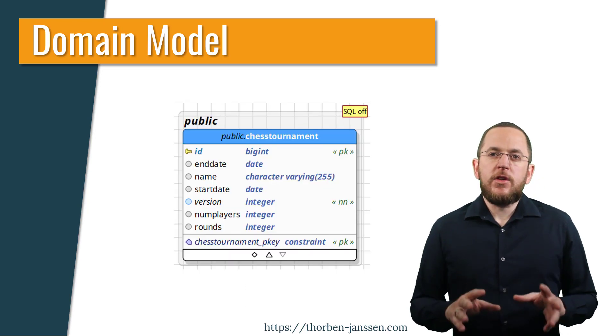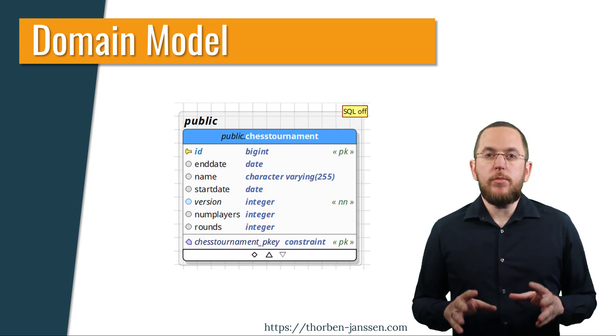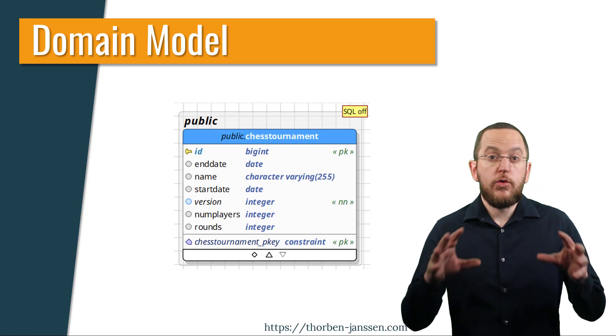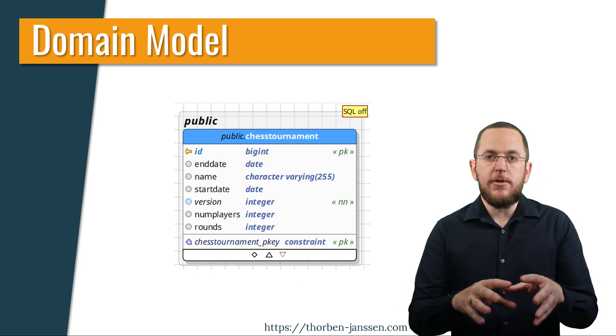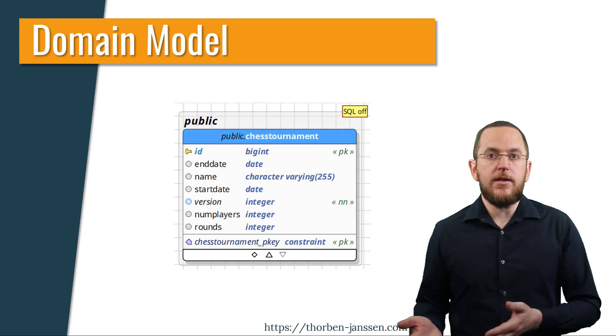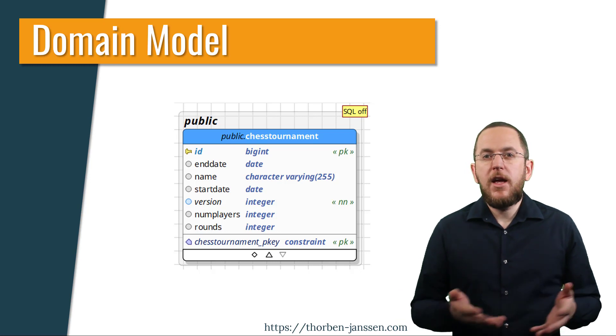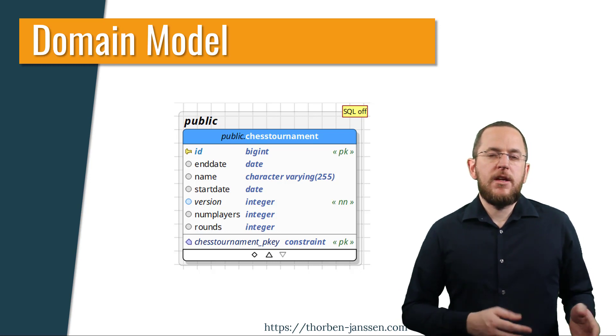Using the inheritance type SingleTable, we will map all three classes to the ChessTournament table. It contains a column for each attribute of the three entity classes, but no discriminator column.